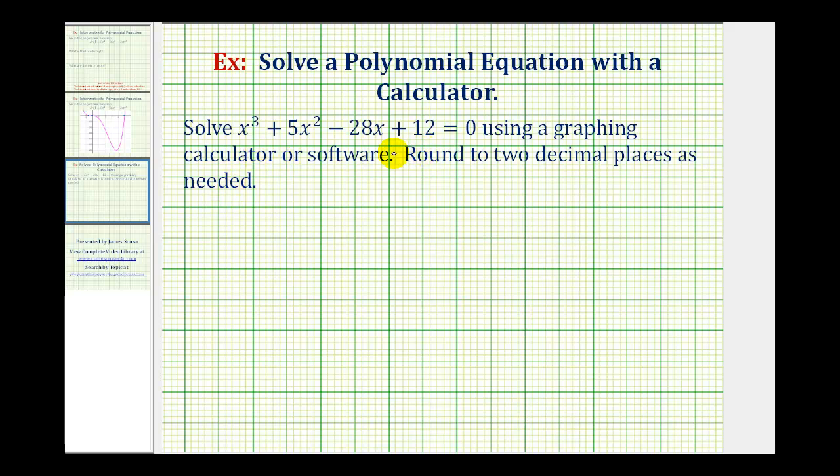To solve this on the graphing calculator, we're going to graph the polynomial function y equals x to the third plus 5x squared minus 28x plus 12.